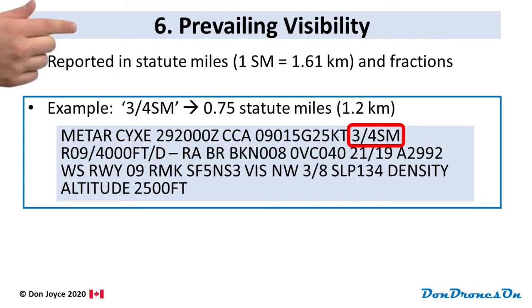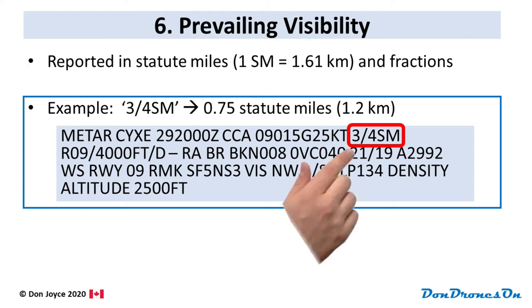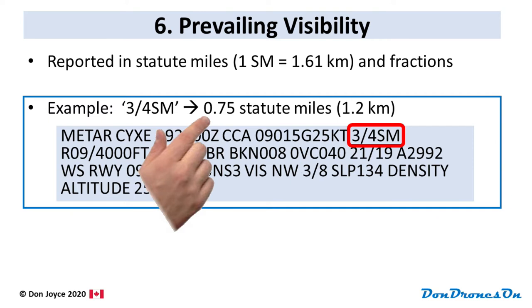After the wind group is group number six — the prevailing visibility. This is reported in statute miles, where a statute mile is 1.61 kilometers, and in some cases it's represented as fractions. It's a bit odd that it's in statute miles and not nautical miles like most other things in aviation, but that's what it is. In our example it's 3/4 SM — three quarters, or 0.75 statute miles, which converts to 1.2 kilometers.